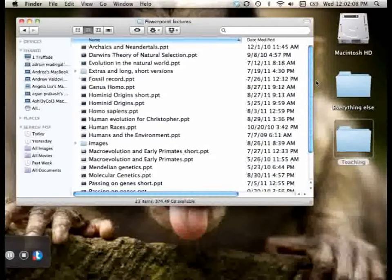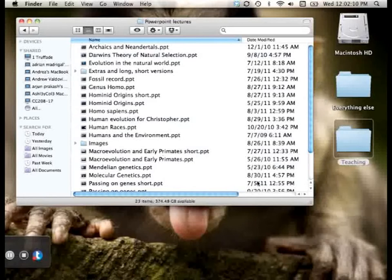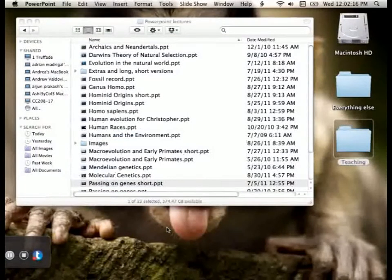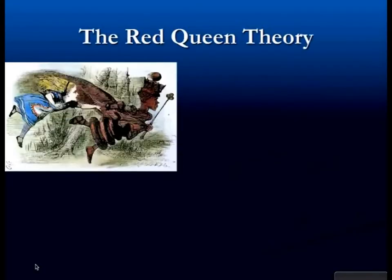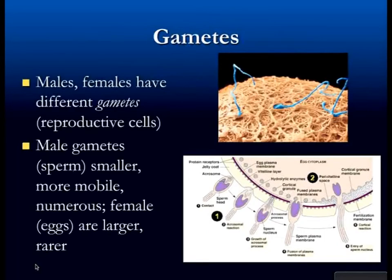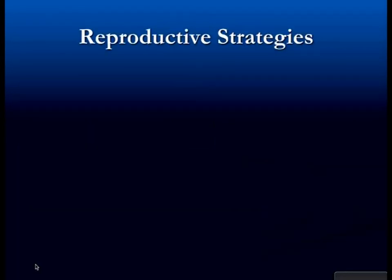I know it seems like I'm sarcastic and I don't care, but I do. Okay, so what are we doing? We are doing passing on genes. Last time we talked, I think we got through the Red Queen Theory, gametes, sex determination, and we stopped at reproductive strategies. We're reviewing ideas that come up in the film and going to expand on them.